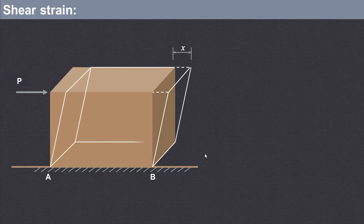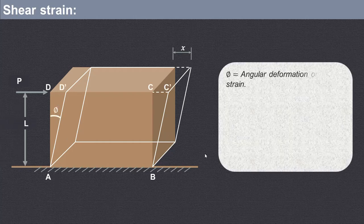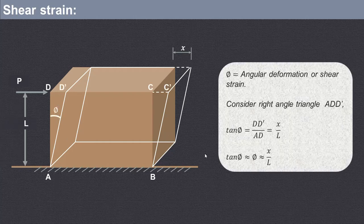Now let us see some theory parts. Here we have a block A, B, C, D subjected to a tangential force P. Because of the application of force P on this surface, D will get displaced to D dash and C will get displaced to C dash. The angle made with the vertical is phi, and this linear displacement is X.